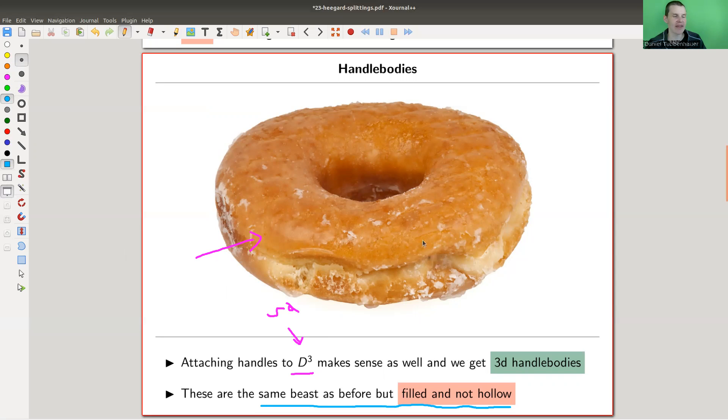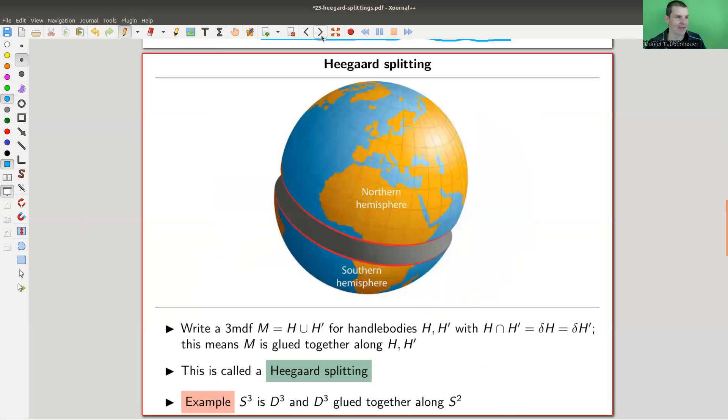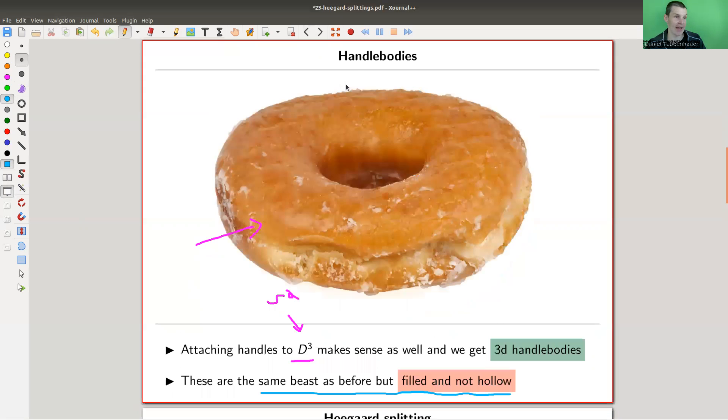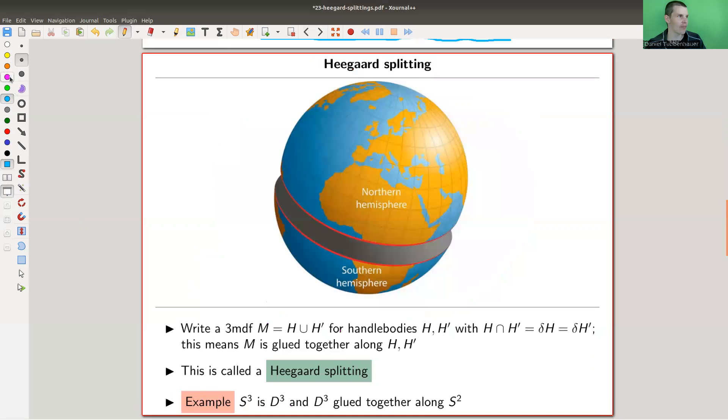And then there's this idea of Heegaard that you can always split the manifold into two handle bodies. And you can glue them along the common boundary. So split it and glue it along the boundary. And the gluing process can be crazy. So this is where the complexity comes in.